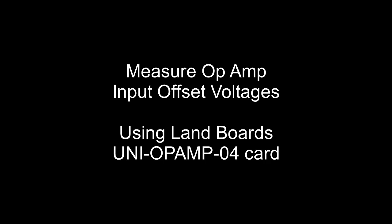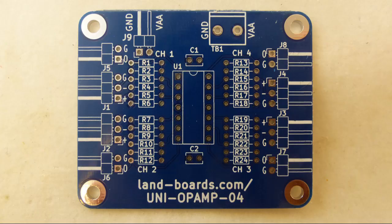Okay, let's take a look at measuring op amp input offset voltages. For this we're going to use the land boards uni op amp o4 card. The uni op amp o4 card provides four channels that use a quad op amp standard type of part like an LM324 or an MCP6004 or others and provides resistors and spot pads for resistors.